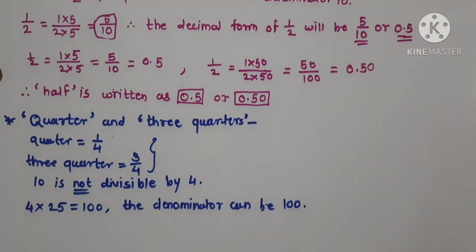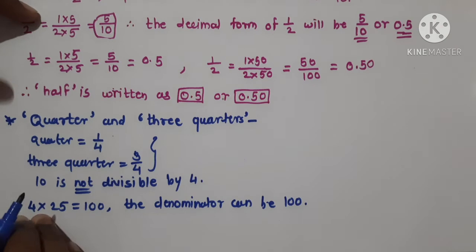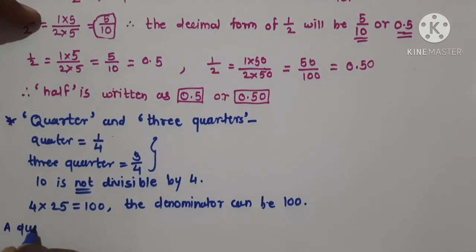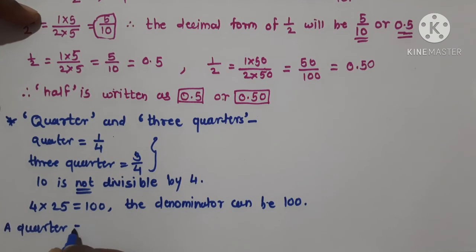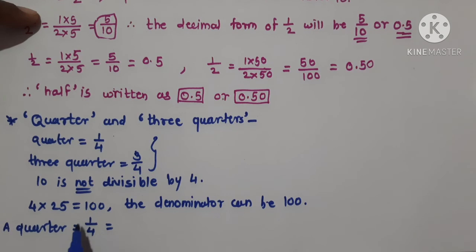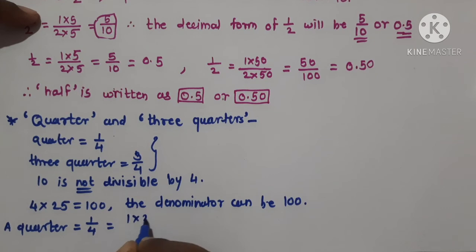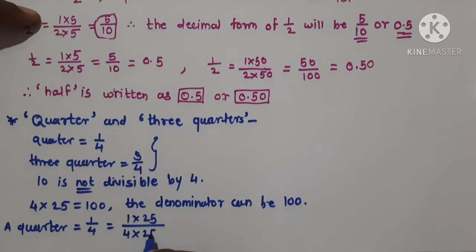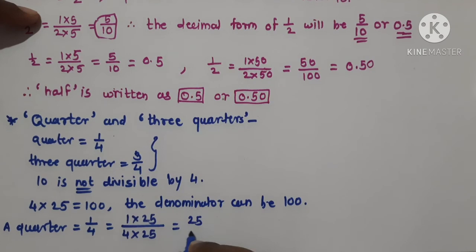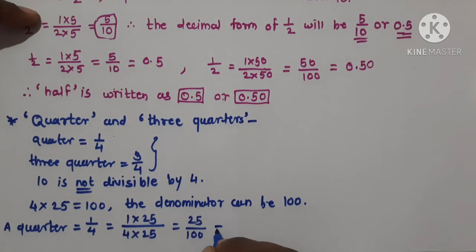Now let us convert a quarter into decimal form. A quarter is equal to 1 upon 4. We will multiply 1 upon 4 by 25. So 1 × 25 upon 4 × 25 equals 25 upon 100, which is equal to 0.25.